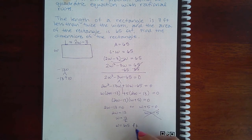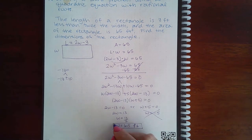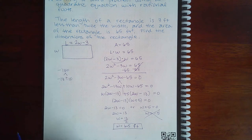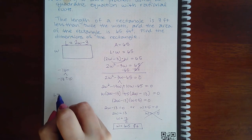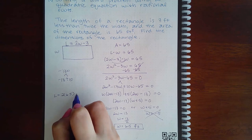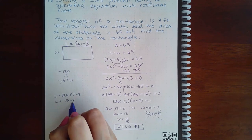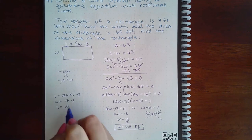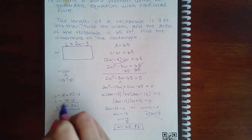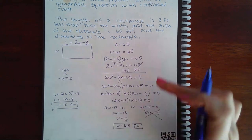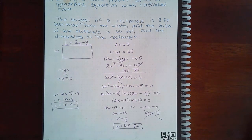If we want to find the length, we have to go back to the expression for the length. Length is 2 times the width minus 3, which means the length is 13 minus 3, or the length is 10 feet. 10 feet times 6.5 feet will give us 65 feet squared.